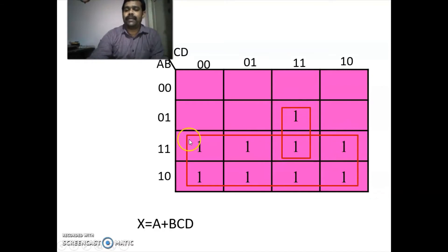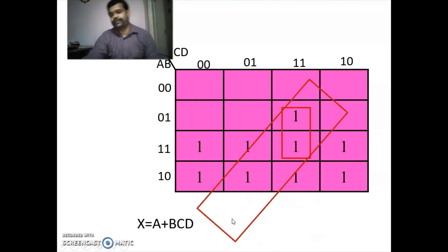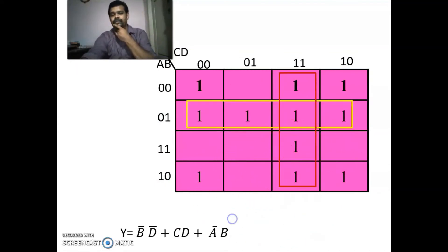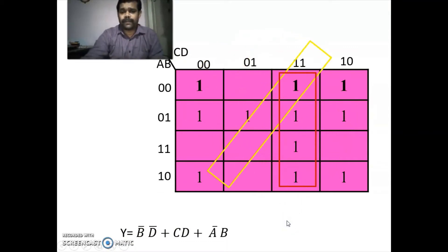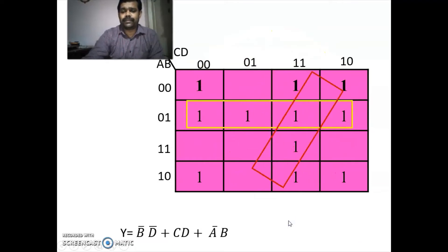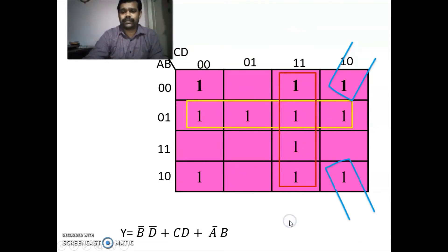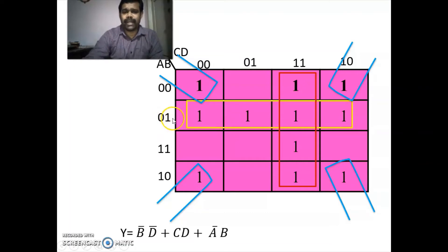The K-map for Y: we plot the minterms and group the ones. The expression for the first quad is A-bar B, for the second quad is CD, and for the third quad is B-bar D-bar. Now for Z, we plot the minterms, group, and write the expression.